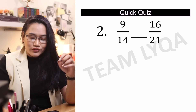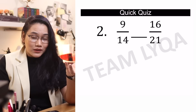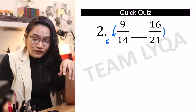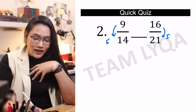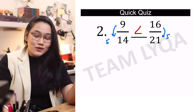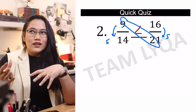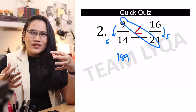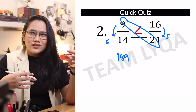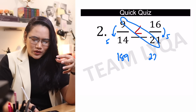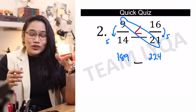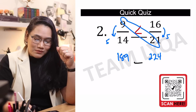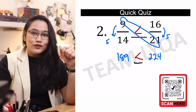Next question: 9 over 14 and 16 over 21. Hindi sila pareho ng numerator, hindi sila pareho ng denominator, pero tingnan natin kung pareho yung difference. Ang difference nito ay 5, difference nito 5 din. So sa aking speed techniques, alam ko agad: 16 over 21 ang mas malaki. We can use cross multiplication to compare: 9 and 21, that would be 189. 14 and 16 — 14 times 16, that's 160 plus 64, so 224. So mas malaki ang right side — 16 over 21. Tama pa rin tayo.